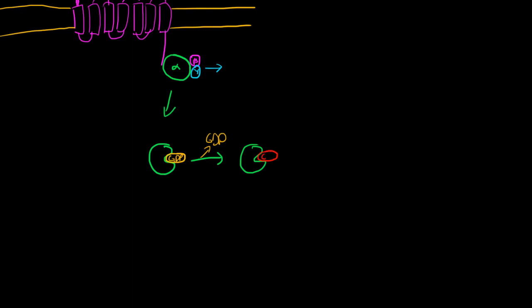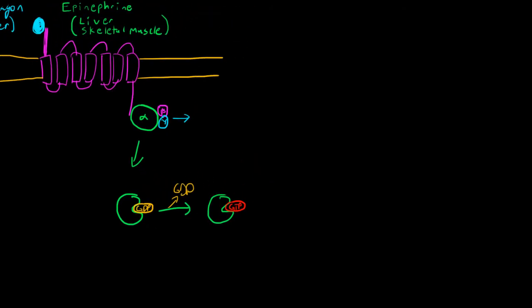Once the GTP binds, we are now active. Once this alpha subunit is active, it's going to swing back up and hit a membrane-bound enzyme, which I'll draw here in green. This membrane-bound enzyme is called adenylate cyclase.